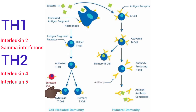Cytotoxic T cells activated by helper T cells circulate through blood, lymph, and lymphatic tissues and destroy invading organisms by attacking them directly. The receptor on the outer membrane of cytotoxic T cells binds tightly with antigenic organisms. The cytotoxic T cells then enlarge and release cytotoxic substances like lysosomal enzymes, which destroy invading organisms. Each cytotoxic T cell can destroy a large number of microorganisms one after another, and they also destroy cancer cells, transplanted cells, and even the body's own tissues affected by foreign bodies such as viruses.